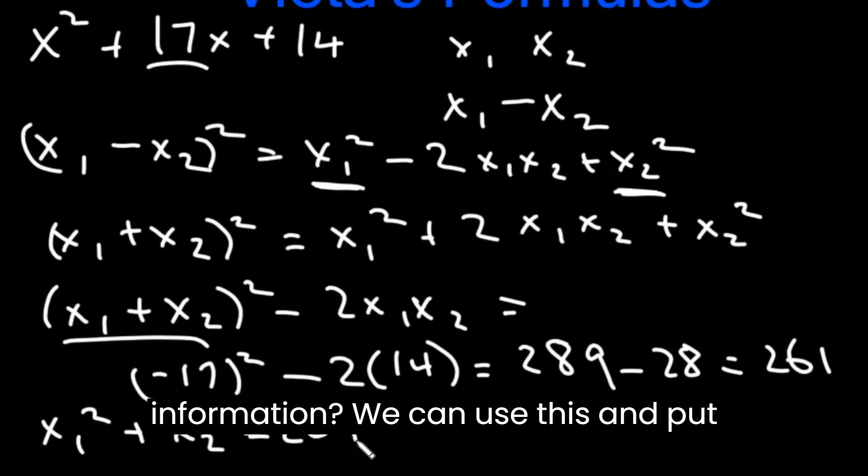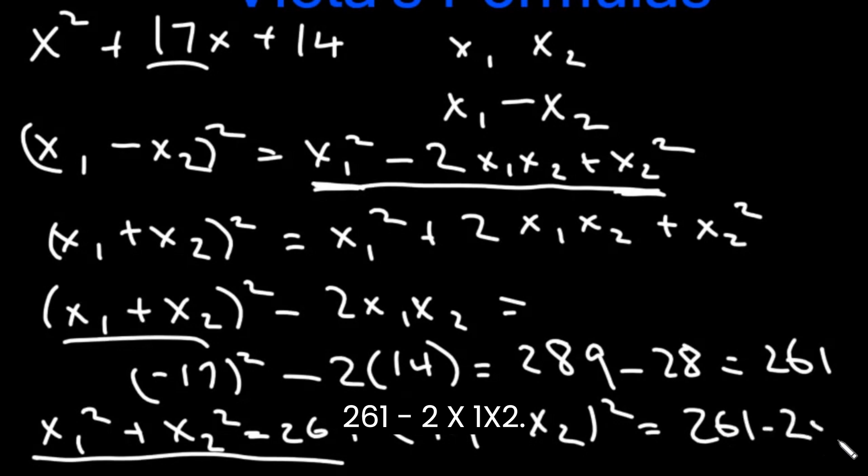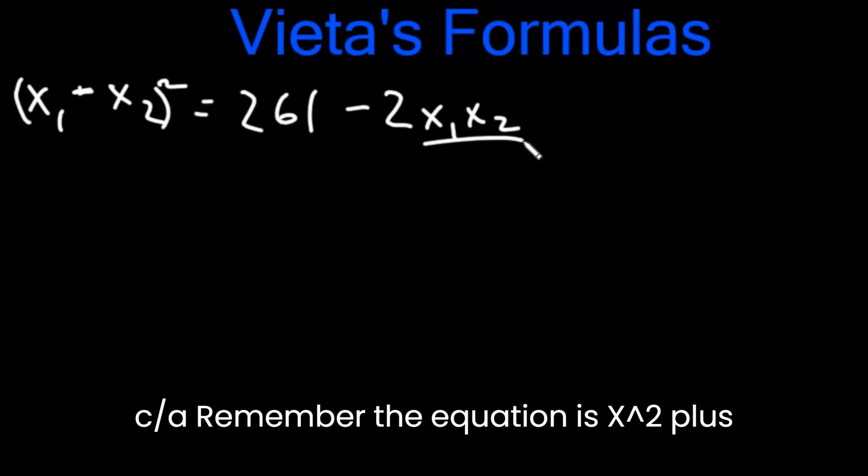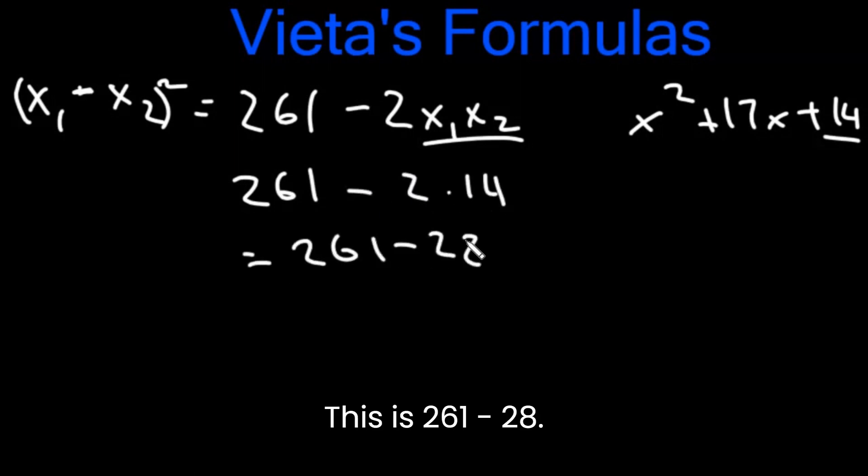What are we going to do with this information? We can use this and put it back in here. x1 minus x2 square is equal to 261 minus 2x1x2. We can find x1x2, that's just c by a. Remember the equation is x square plus 17x plus 14, so c by a is 14. So this is 261 minus 2 times 14. This is 261 minus 28 which is 233.